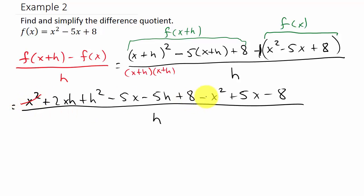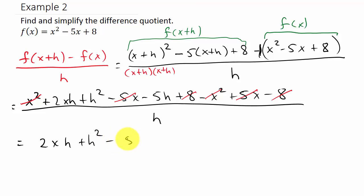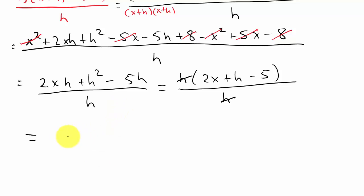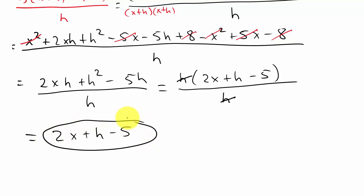The x squareds cancel out, the minus 5x and plus 5x cancel, and the plus 8 and minus 8 cancel. So I'm left with 2xh plus h squared minus 5h, all over h. We want to get rid of the h in the denominator, so I factor out an h: h times 2x plus h minus 5, over h. The h's cancel and I'm left with 2x plus h minus 5. That's my answer.